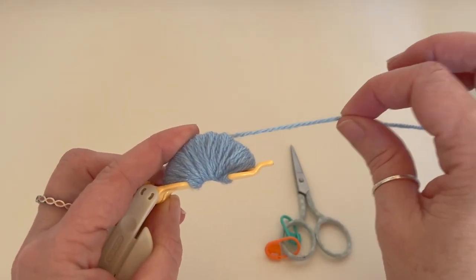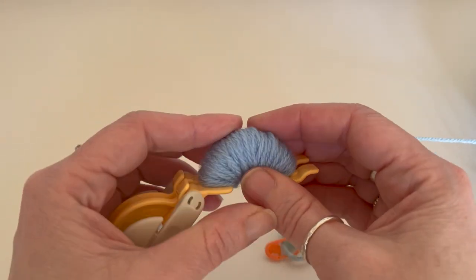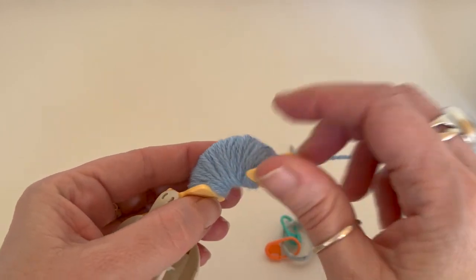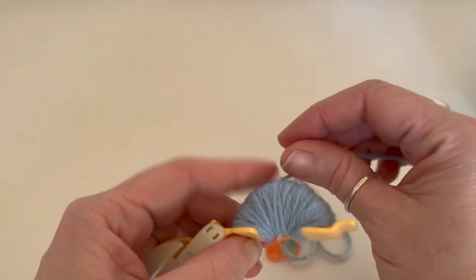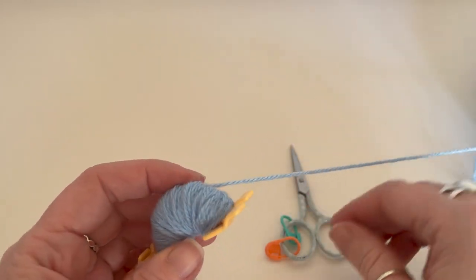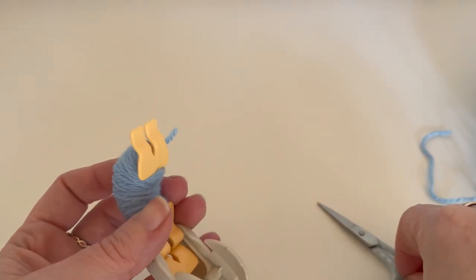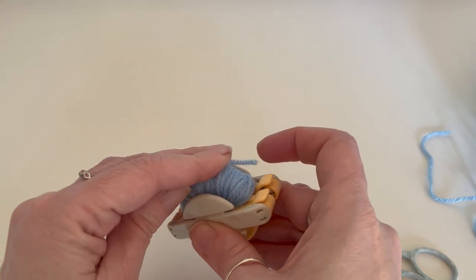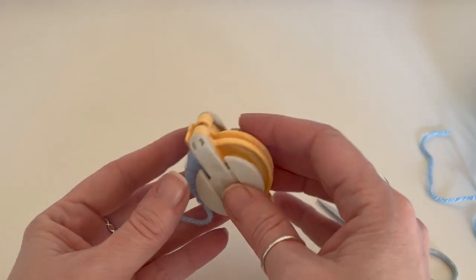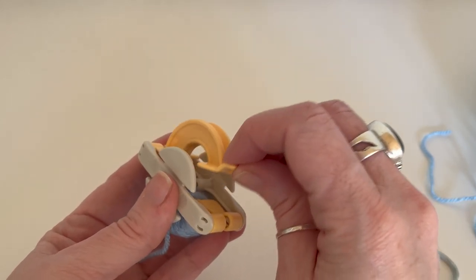So once you think you have enough yarn on your pom-pom maker for this side, we're just going to snip our yarn off. Fold it up and fold it up and this is what it looks like. And then we're going to do the same on the other side.